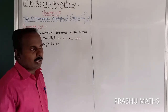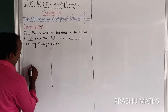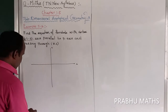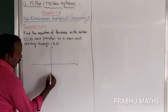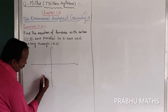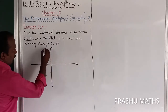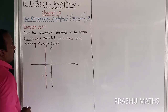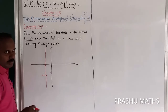Let us take the graph sheet. This is the y-axis and this is the x-axis. The vertex is given as (-1, -2), which is in the third quadrant. So minus 1 on x and minus 2 on y — that is the vertex. The axis is parallel to y-axis. Both upward open and downward open parabola are possible at this stage.